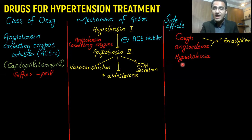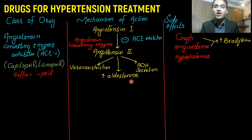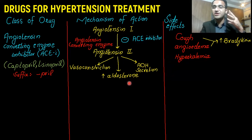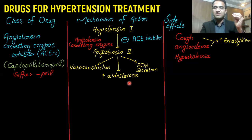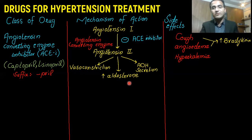Another side effect of ACE inhibitors is hyperkalemia. This occurs because we are blocking the production of aldosterone. Aldosterone normally causes reabsorption of sodium and loss of potassium in urine. Since we have blocked aldosterone's action, potassium is retained in the blood, resulting in elevated blood potassium levels — hyperkalemia.